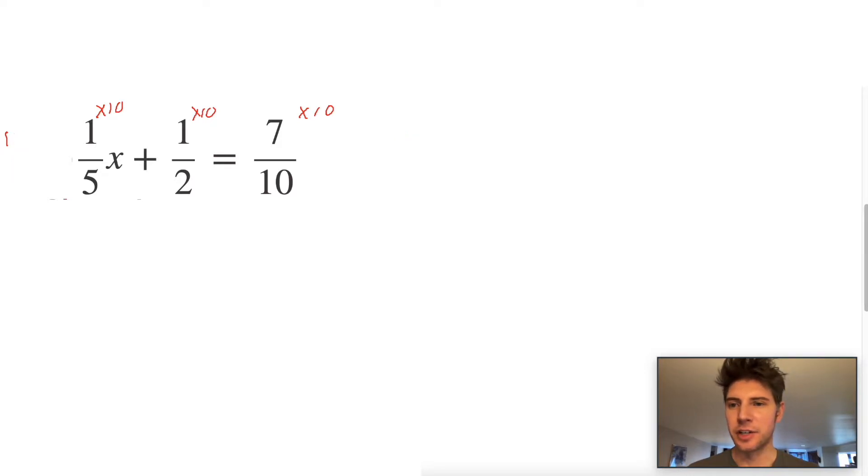And I just like to write it for each term: times 10, times 10, times 10. Now watch what happens when we do this. You'll see why this works. So 1 times 10 is 10, so it's 10 over 5x. Plus 1 times 10 is 10, so it's 10 over 2. Equals, and 7 times 10 is 70 over 10.